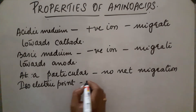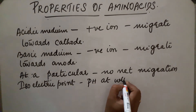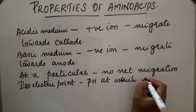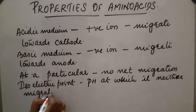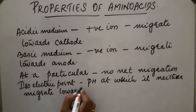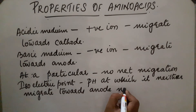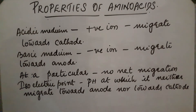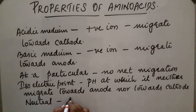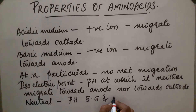The isoelectric point is the pH of an amino acid at which it neither migrates towards the anode nor towards the cathode. In the case of neutral amino acids, this pH is between 5.5 and 6.3.